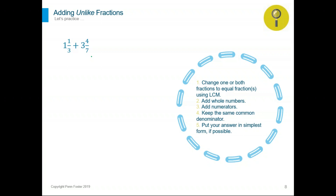By practice, you will notice and identify the LCD without having to list all the multiples of both denominators. If we multiply three times seven, the denominator becomes 21. We have to do the same thing on the top — one times seven. If we do the same thing on the other fraction, multiply times three to make that denominator 21 as well. So three times seven is 21, and seven times three is 21.